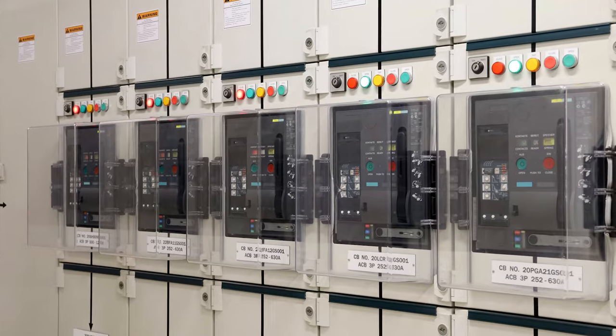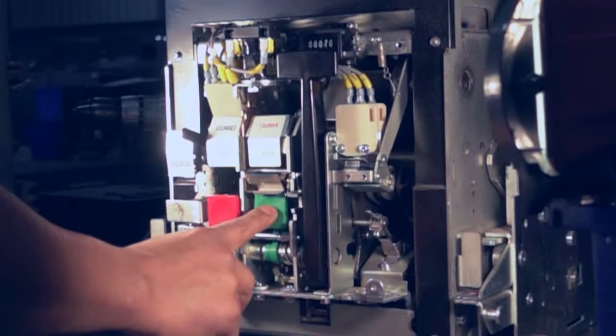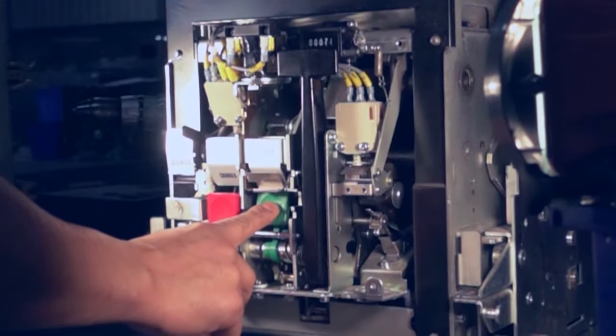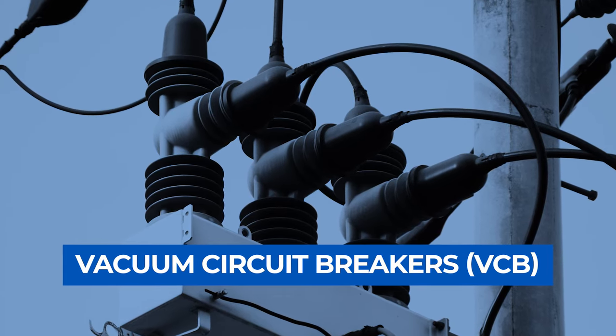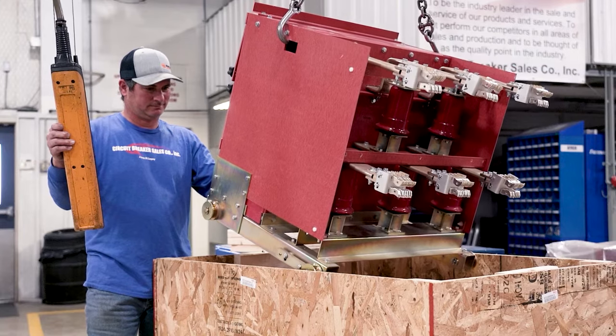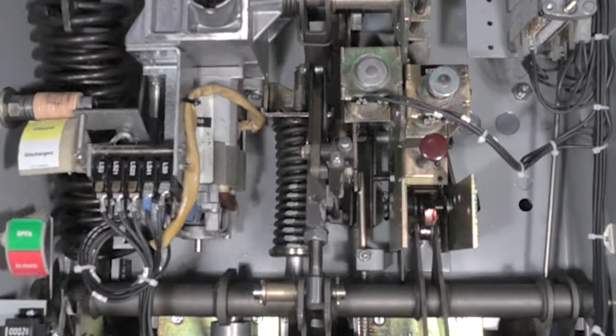ACBs are the first breakers on our list to move exclusively beyond low-voltage to medium-voltage power distribution. A VCB has a vacuum interrupter, sometimes called a vacuum bottle, and a spring-loaded moving contact.